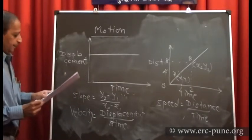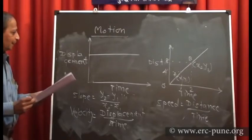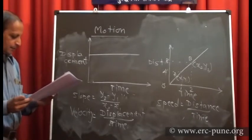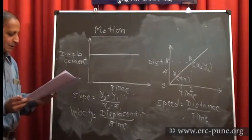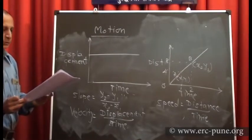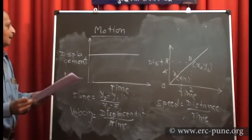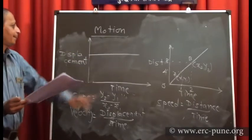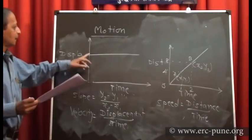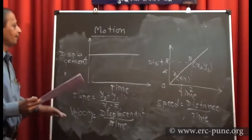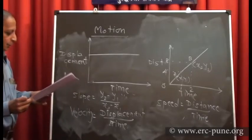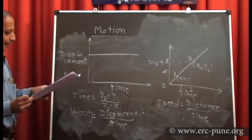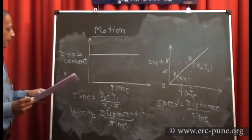The displacement-time graph parallel to the time axis tells us that the velocity of the particle must be equal to 0, because there is no change in the position of the body. Even as time increases, the displacement remains the same, so velocity equals zero.